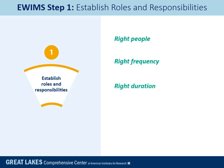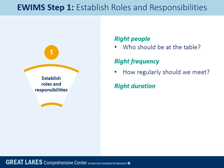Ask yourself these questions: Who should be at the table? How regularly should we meet? And how much time should we meet for? Keep in mind that the main responsibility of the eWIMS team is to engage in data review, interpretation, and action. The purpose of the team is to decrease red flags or indicators that students are at risk for dropping out of school. Depending on your school's constraints, you may choose to integrate the eWIMS process into the work of an existing team, rather than create a new team.